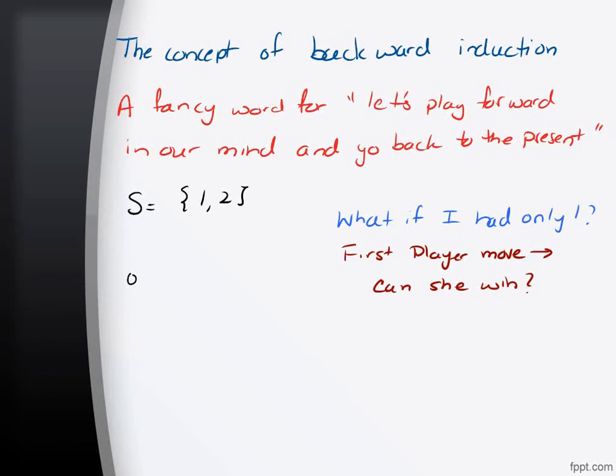Yay. First player move. Can she win? Yes. It's going to be me. Right? Because I'm going to grab that one token and the second player is not going to have a move. So I'm going to put a 1 there indicating that first player gets to win. Every time the first player can win, I'm going to put a 1 underneath it.